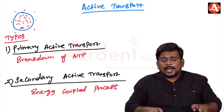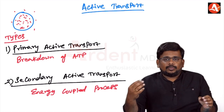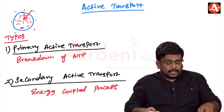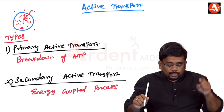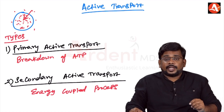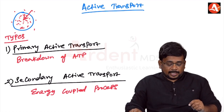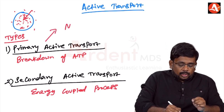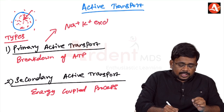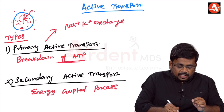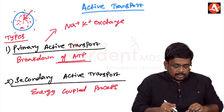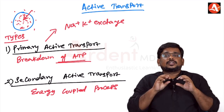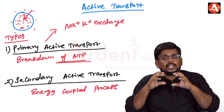Active transport is movement of a molecule from low concentration to higher concentration, against the concentration gradient, and it needs energy. There are two types: primary active transport and secondary active transport. The best example of primary active transport is the sodium-potassium exchange in the cell, which requires ATP. Secondary active transport uses an energy-coupled process.